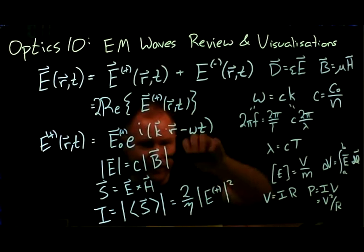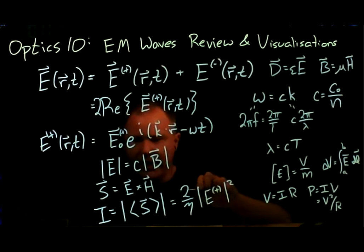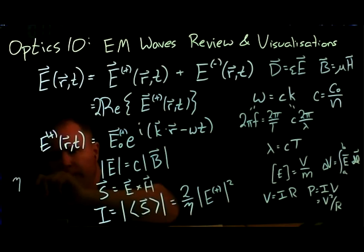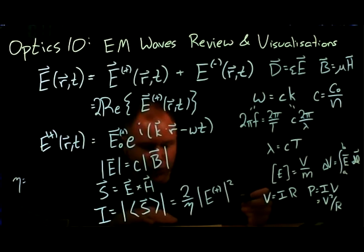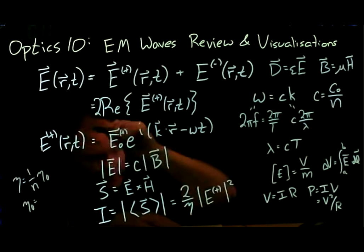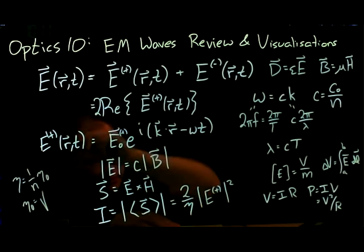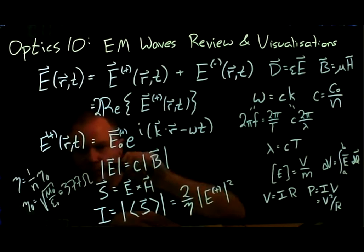The η came from Maxwell's equations — it has to do with ε and μ. The actual η is one over the index of refraction times η-naught in vacuum, where η-naught = √(μ-naught/ε-naught). If you calculate this, it works out to be around 377 ohms.